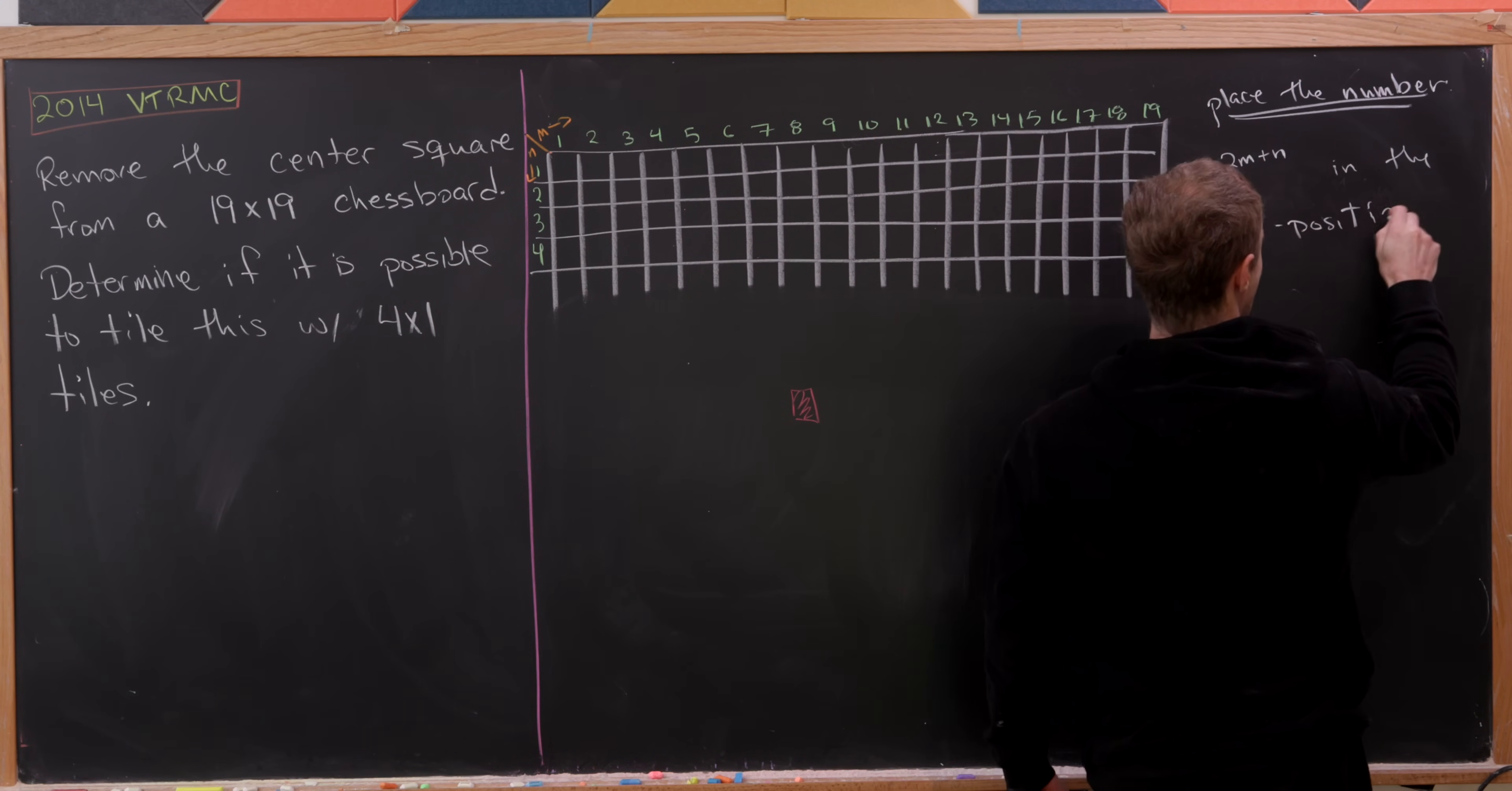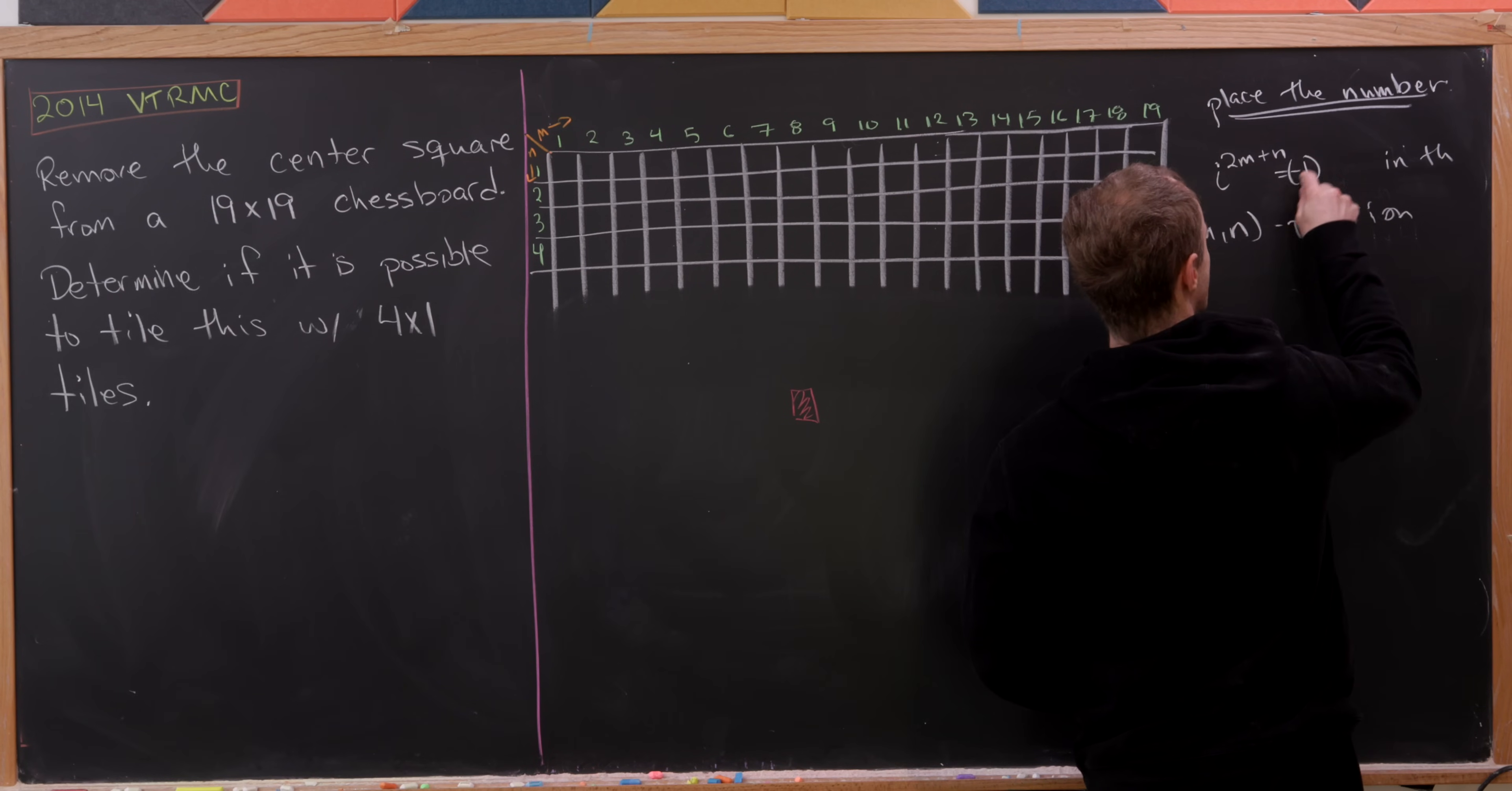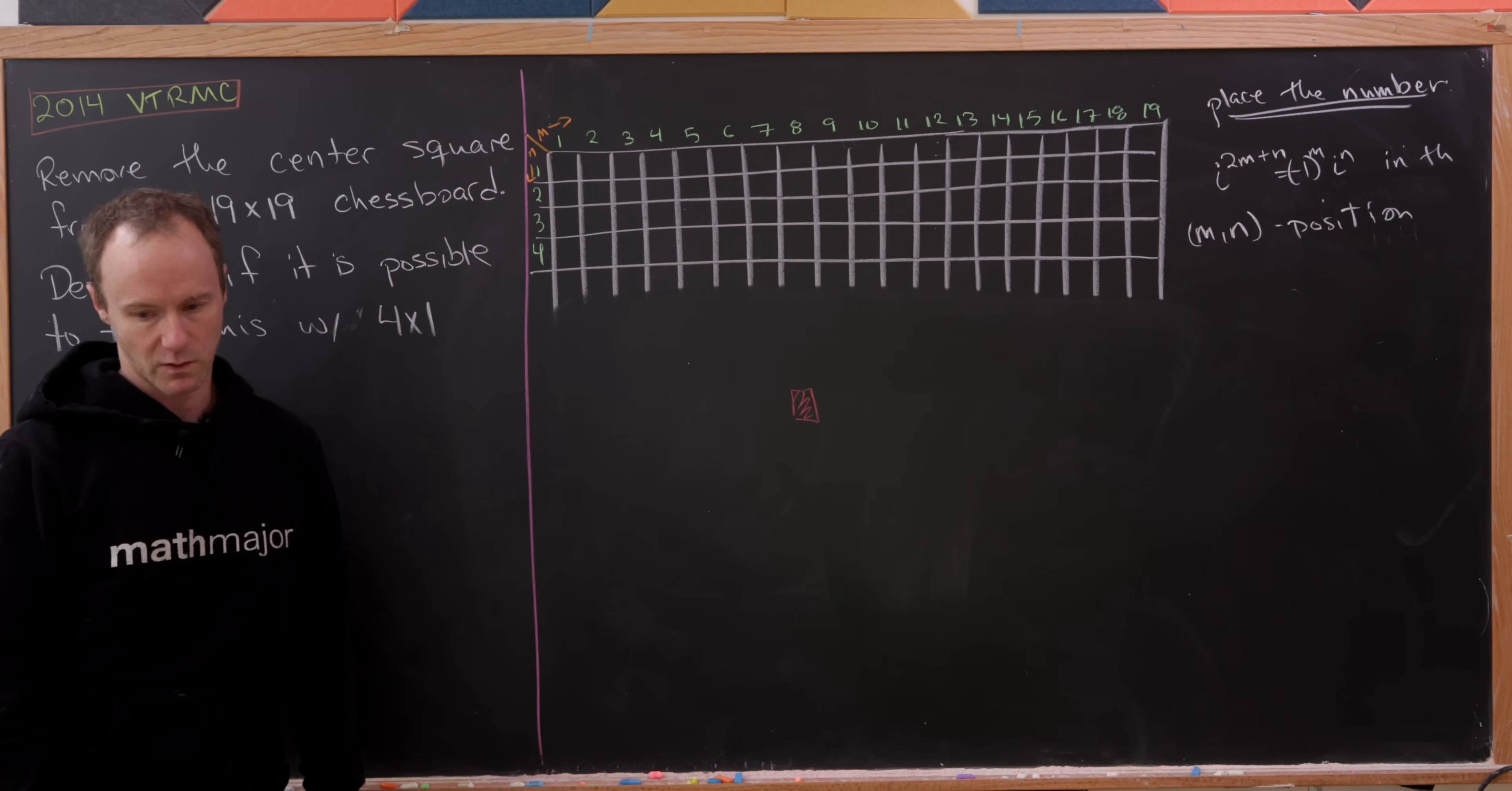So it's going to be i to the power 2m plus n in the mn position. So I've laid out my chessboard so it's pretty obvious what the mn position is. But let's observe that this i to the 2m plus n is, in fact, just equal to minus 1 to the m times i to the n. So we've got a mixture of roots of 1 and roots of negative 1.